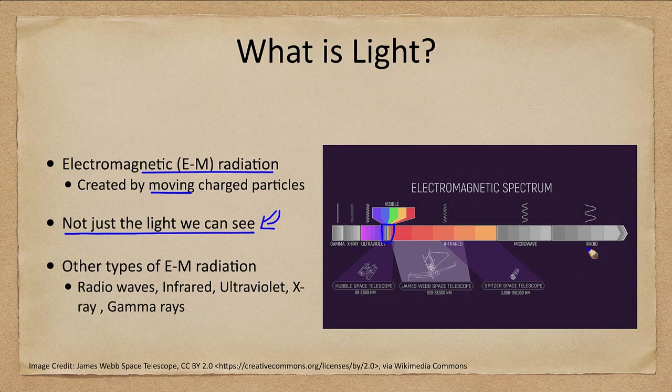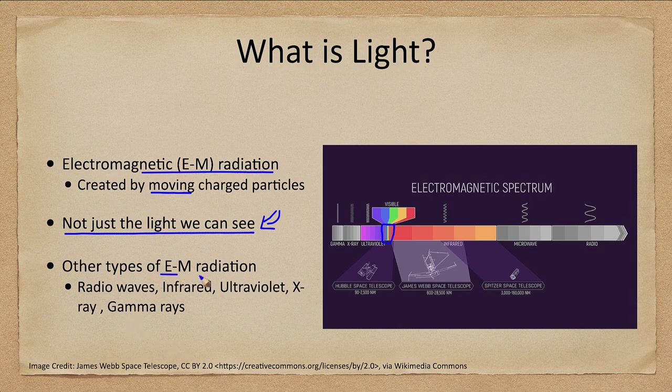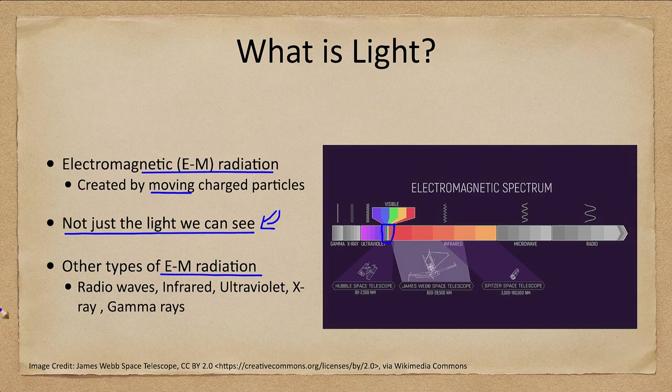So we also have longer wavelengths like radio waves, microwaves, and infrared, and shorter wavelengths like ultraviolet, x-ray, and gamma rays. But these are all electromagnetic radiation and are light just like visible light.